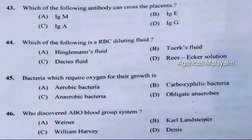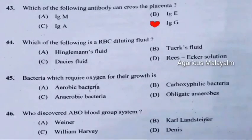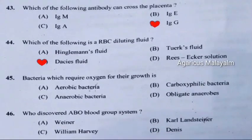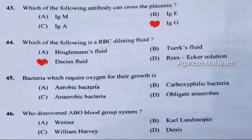Question 43: Which of the following antibody can cross the placenta? Correct answer is option D, immunoglobulin G. Question 44: Which of the following is a RBC diluting fluid? Correct answer is option C, Dacie's fluid. Question 45: Bacteria which require oxygen for their growth — correct answer is option A, aerobic bacteria.